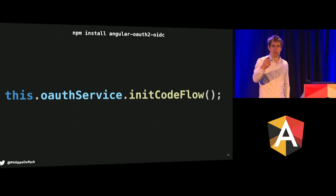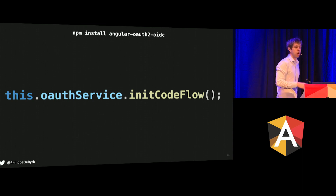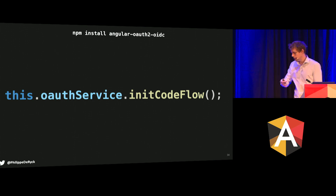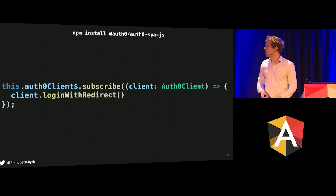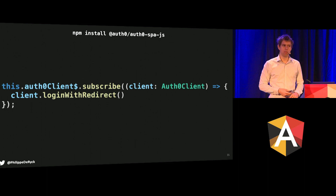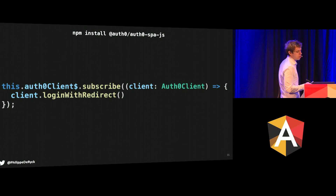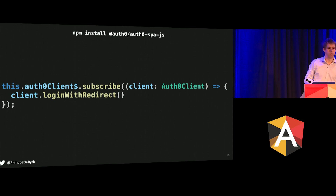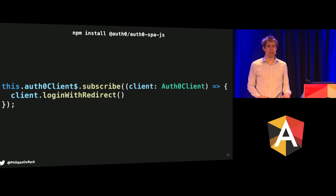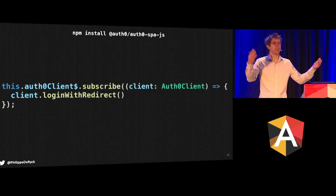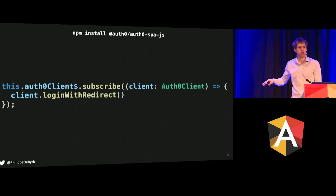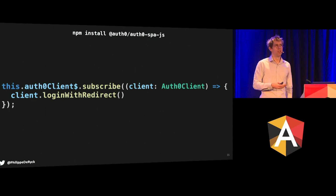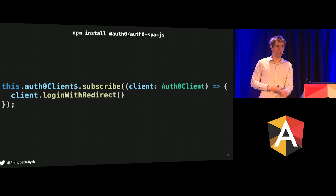Auth0 has their own library called the Auth0 SPA JS — we used that in the workshop yesterday. They even have observables, so you subscribe to that and when it fires, you run the flow. The library handles everything for you. You don't even have to specify which flow, because the library is for single-page applications and follows the current best practice of using PKCE. People implemented OAuth support yesterday in an Angular application — and it was maybe a hundred lines of code that you copy-pasted from the documentation of Auth0. One file, done. Everything happens automatically.